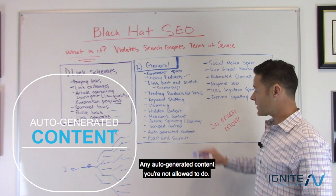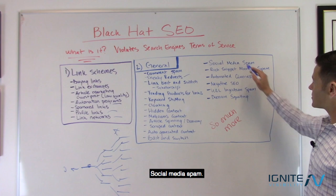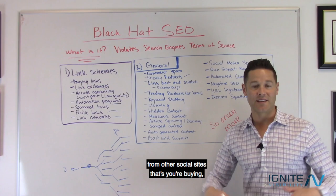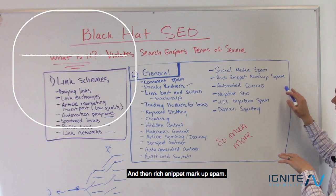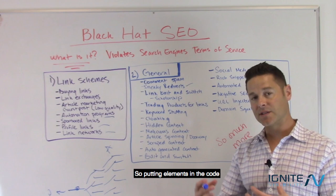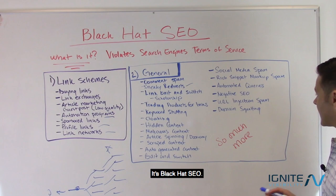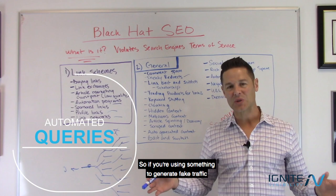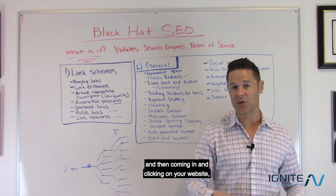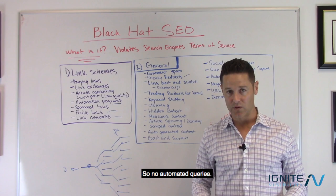Any auto-generated content is not allowed. Social media spam — if you're buying thousands of shares from social sites — that's Black Hat SEO. Rich snippet markup spam: putting structured data elements in your code to enhance your Google listing when they're not actually relevant to that page is considered spam. Automated queries — using something to generate fake traffic that searches for your keyword and clicks on your website — that's also not allowed within Google.